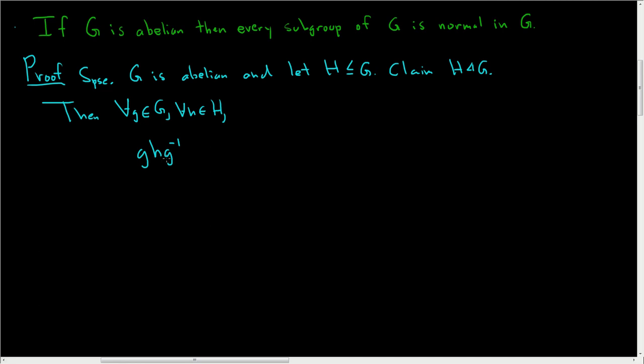Well, g, h, and g inverse are all elements of G, right? H is a subgroup of G, so little h is also in G. G is abelian, so these commute.